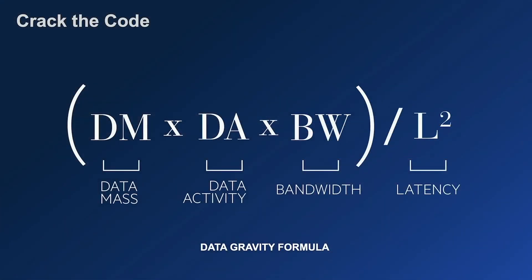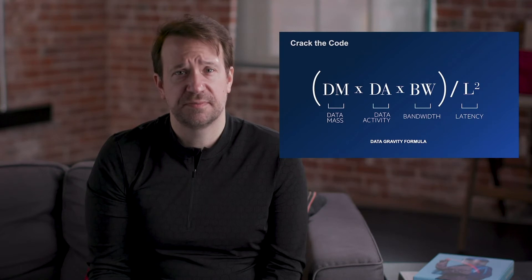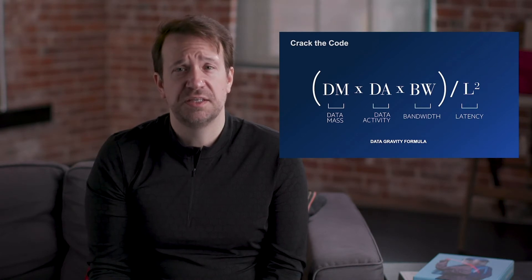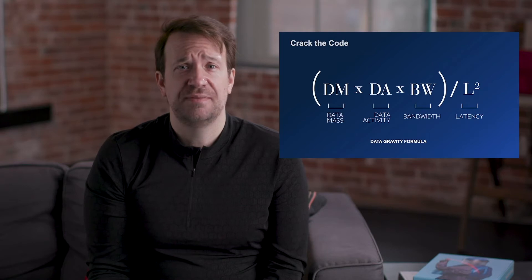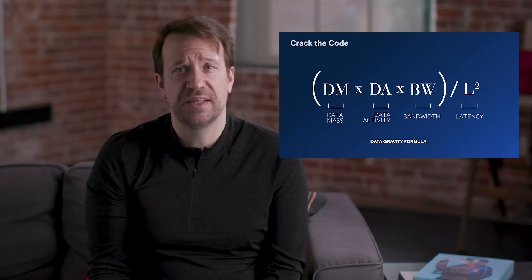We looked at all of this and asked how we could rationalize it into something simplified. That's where the formula for the Data Gravity Index came in. The formula is: data mass times data activity times bandwidth, divided by latency squared. Data mass is the amount of data at rest. Data activity is data in flight or in motion — transactions, transformations, moving data over the network. Without enough bandwidth, you simply can't make data move.